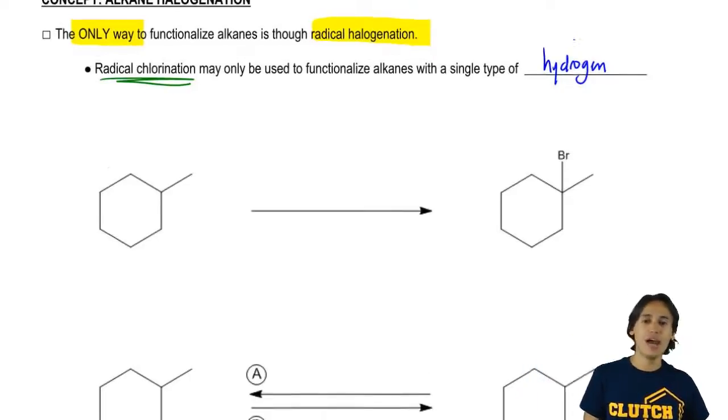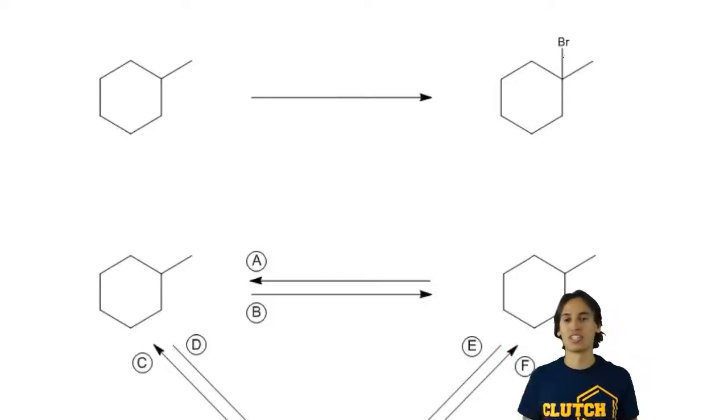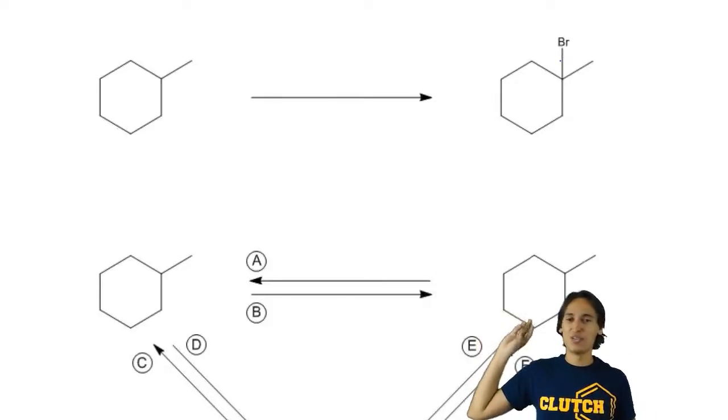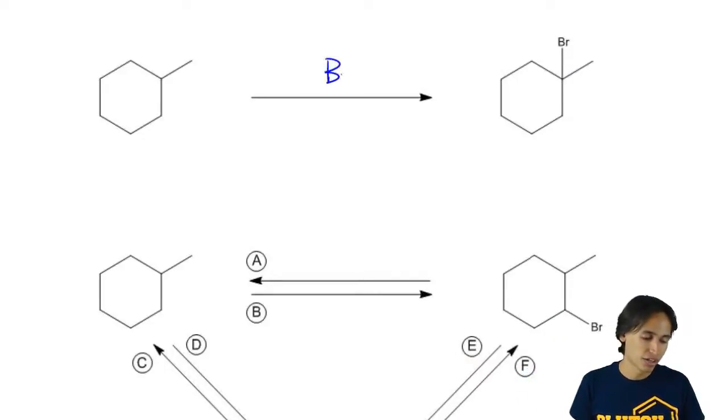So I mean I would love it if all of you guys got this as your retrosynthesis, this first question. So how do you turn that alkane into this alkyl halide? Oh my god, it's so easy. Like you could do this in your sleep. It's just Br2 over heat or light.